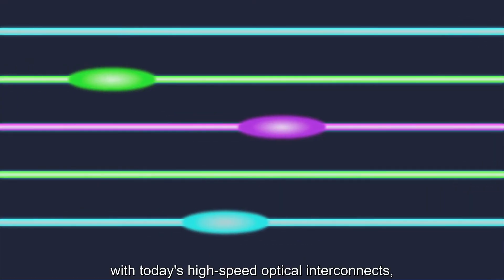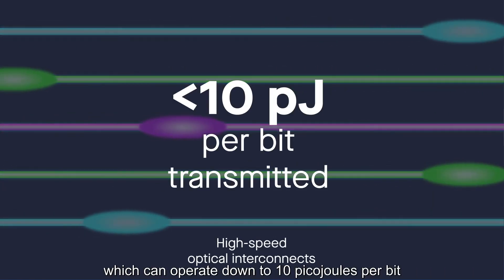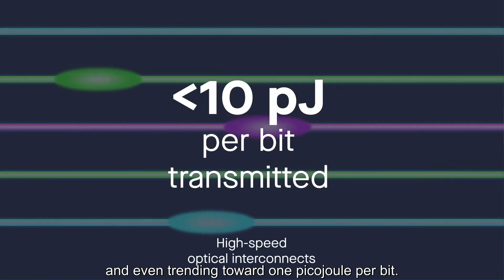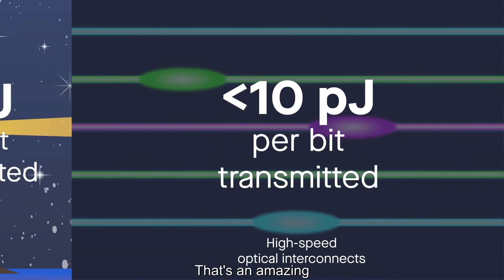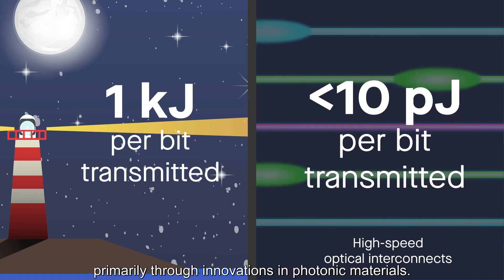Now, let's contrast that with today's high-speed optical interconnects, which can operate down to 10 picajoules per bit and even trending toward one picajoule per bit. That's an amazing 14 to 15 orders of magnitude improvement, primarily through innovations in photonic materials.